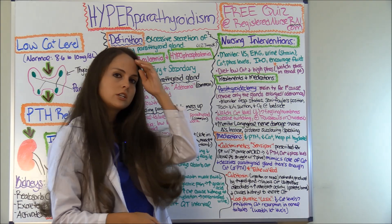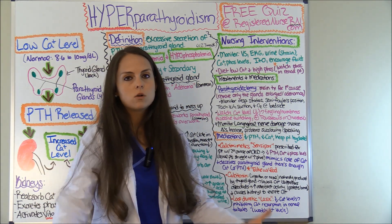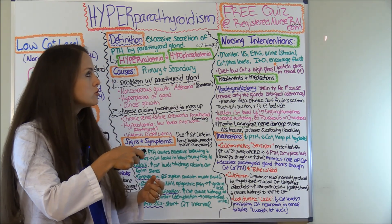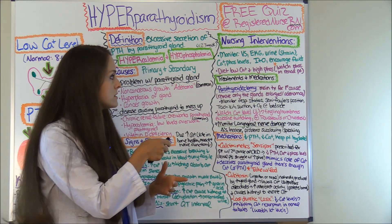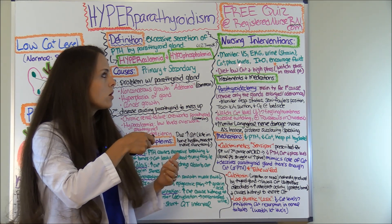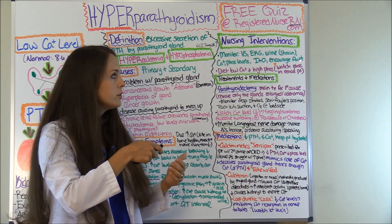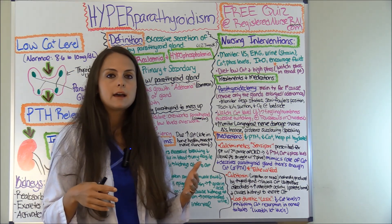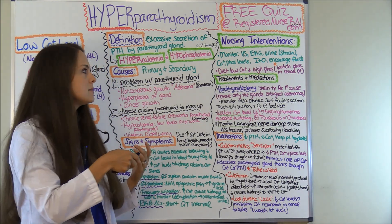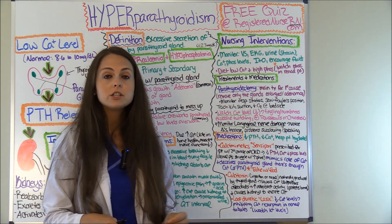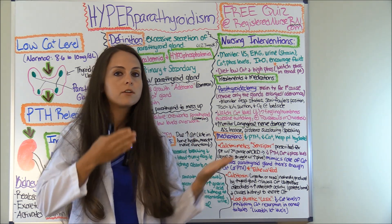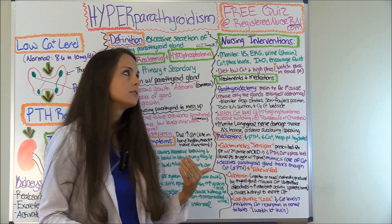For nursing interventions, monitor vital signs and EKG. Strain their urine and watch closely for kidney stones, flank pain, and typical signs of that. Watch calcium and phosphate levels. Monitor intake and output. Encourage fluids as tolerated to keep urine diluted, since these patients have frequent urination. Encourage a diet low in calcium and high in phosphate. However, if this is a renal patient, watch their phosphate levels — they tend to retain phosphate and may actually have hyperphosphatemia, so you do not want to encourage a high-phosphate diet for them.